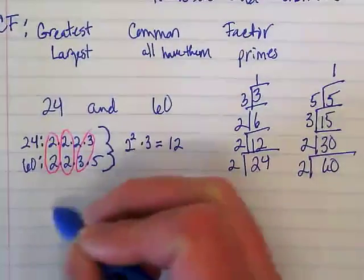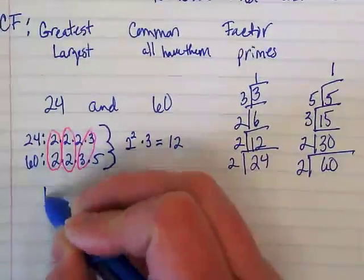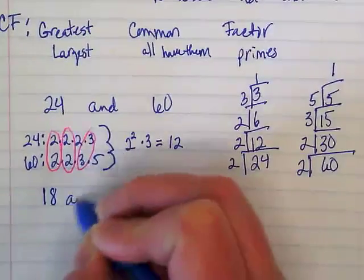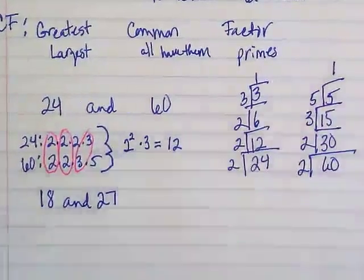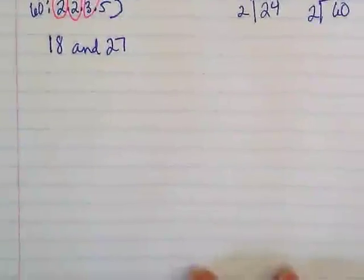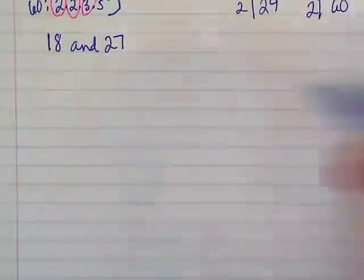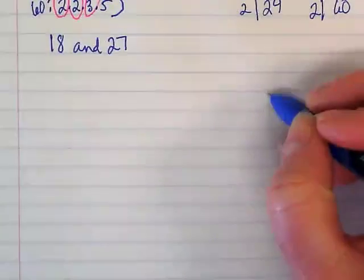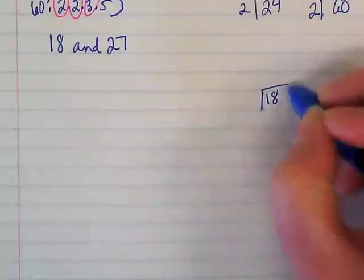Okay, we're going to do one more number. We're going to do 18 and 27. Again, I'm trying to find the greatest common factor. So I'm going to make birthday cakes.